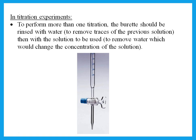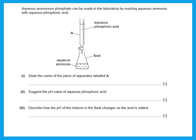We usually have these questions in Paper 6. For example: aqueous ammonium phosphate can be made by reacting aqueous ammonia with aqueous phosphoric acid. What is apparatus A? Something with a tap and graduations is a burette. If it has a tap but no graduations, it is a dropping funnel. For the pH of phosphoric acid — it is a strong acid, so pH 1, 2, or 3.